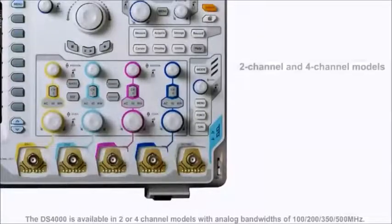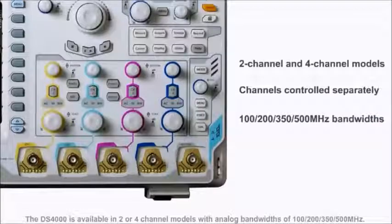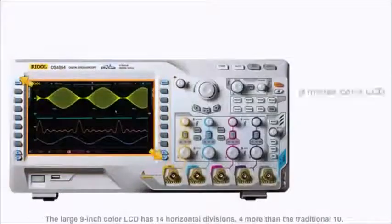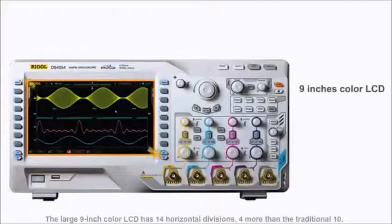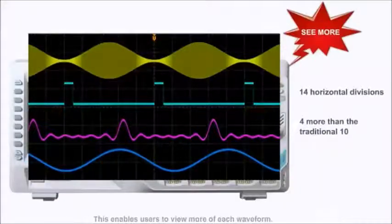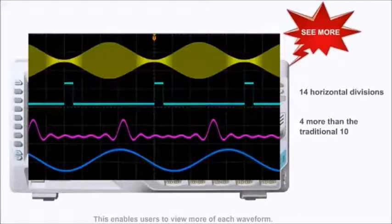The DS4000 is available in two or four-channel models with analog bandwidths of 100, 200, 350, and 500 MHz. The large 9-inch color LCD has 14 horizontal divisions, four more than the traditional 10. This enables users to view more of each waveform.